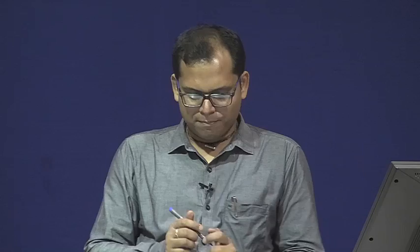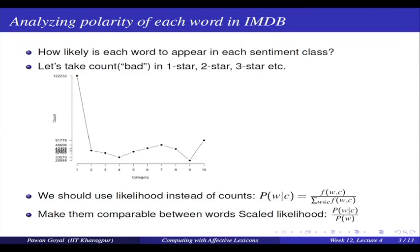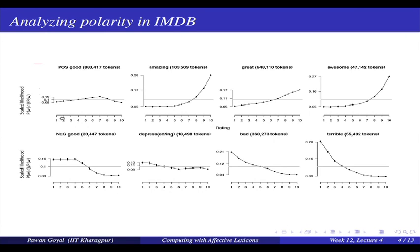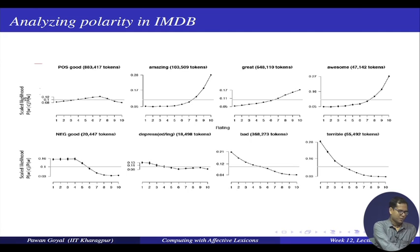We compare words across categories using their scaled likelihood — how they occur in different ratings. On the x-axis we have different ratings 1 to 10, and on the y-axis the scaled likelihood. Being a scaled measure it will be between 0 and 1.